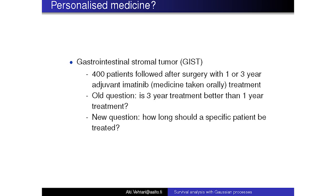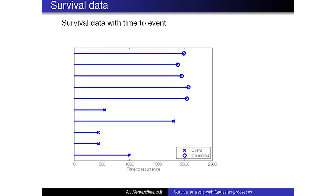The new, more personalized question is: how long should each specific patient be treated with this medicine? I'll show you the analysis I made for this case. The survival analysis data consists of time-to-event data. In this cancer surgery context, there's the time of surgery, which is set to zero, and then there's a time to the event. For some of the patients they will get cancer again, so we have an event and we know how long it took to occur.